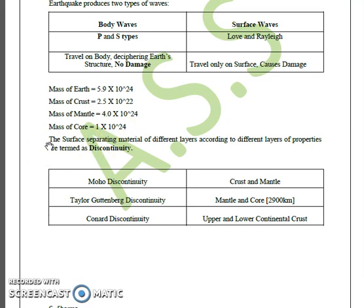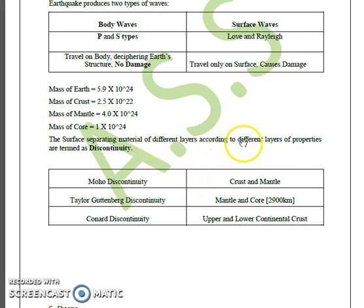Discontinuity is defined as the surface separating material of different layers according to different properties of the minerals present in those layers. It can also be defined as the surface between two layers where the composition of minerals changes abruptly, causing changes in velocity, refractive index, and other properties. These discontinuities are named after the scientists who discovered them. The first is the Moho discontinuity, which occurs between the crust and the mantle, followed by the Wiechert-Gutenberg discontinuity.